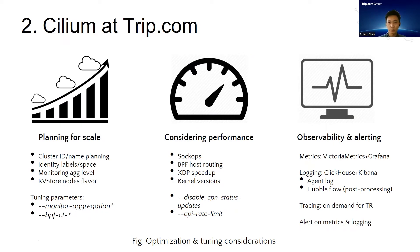The next thing I'd like to talk about is scale. Depending on your cluster scale, certain things need to be planned in advance. For example, identity-relevant labels directly determine the maximum identities you could use. Also, there are parameters that need to be tuned according to your workload throughput, such as the connection tracking table. Another important thing is performance tuning. Cilium includes many high-performance options such as socket operations and eBPF host routing. All these features need specific kernel version support. Besides, disabling some debug-level options is also necessary.